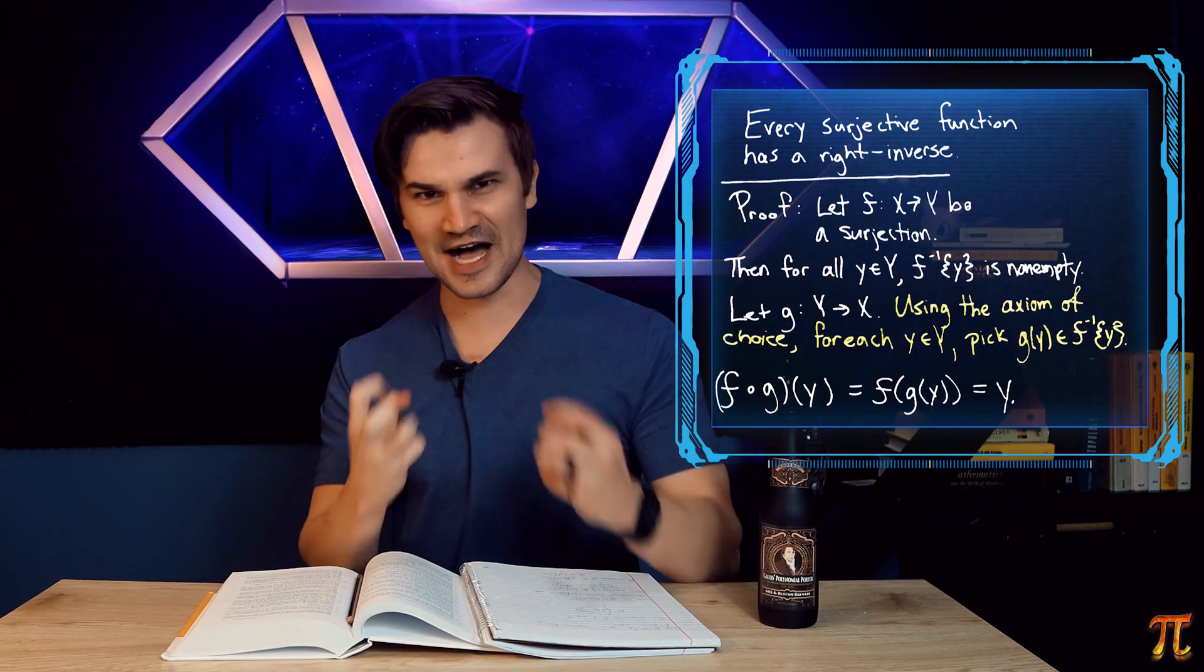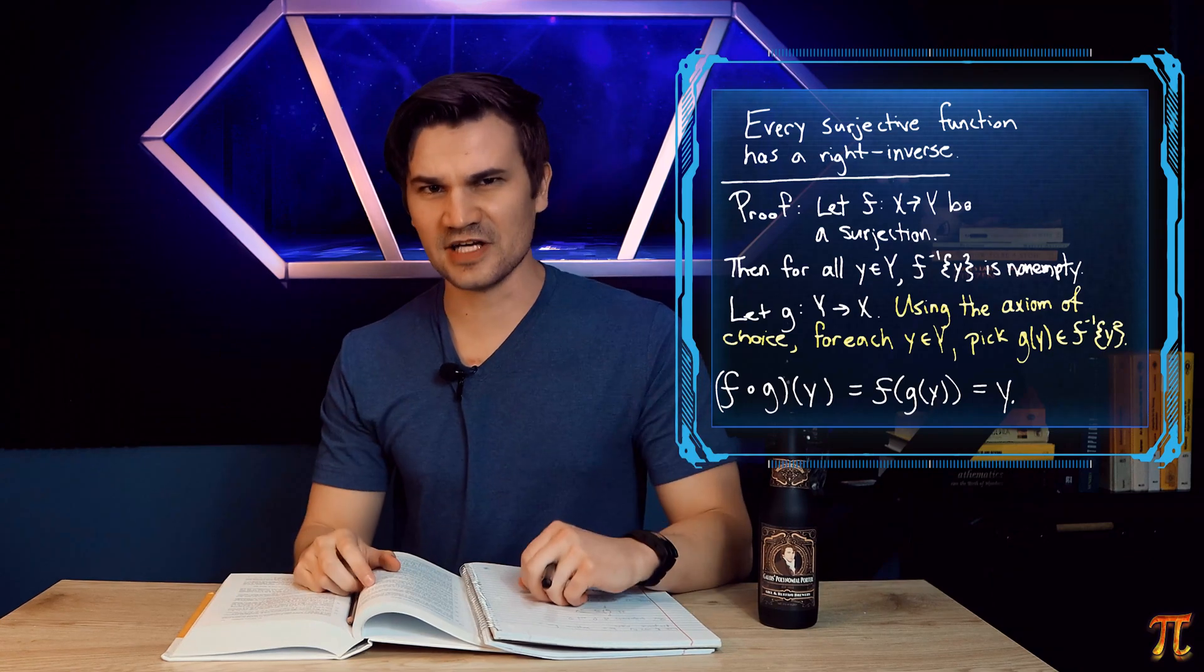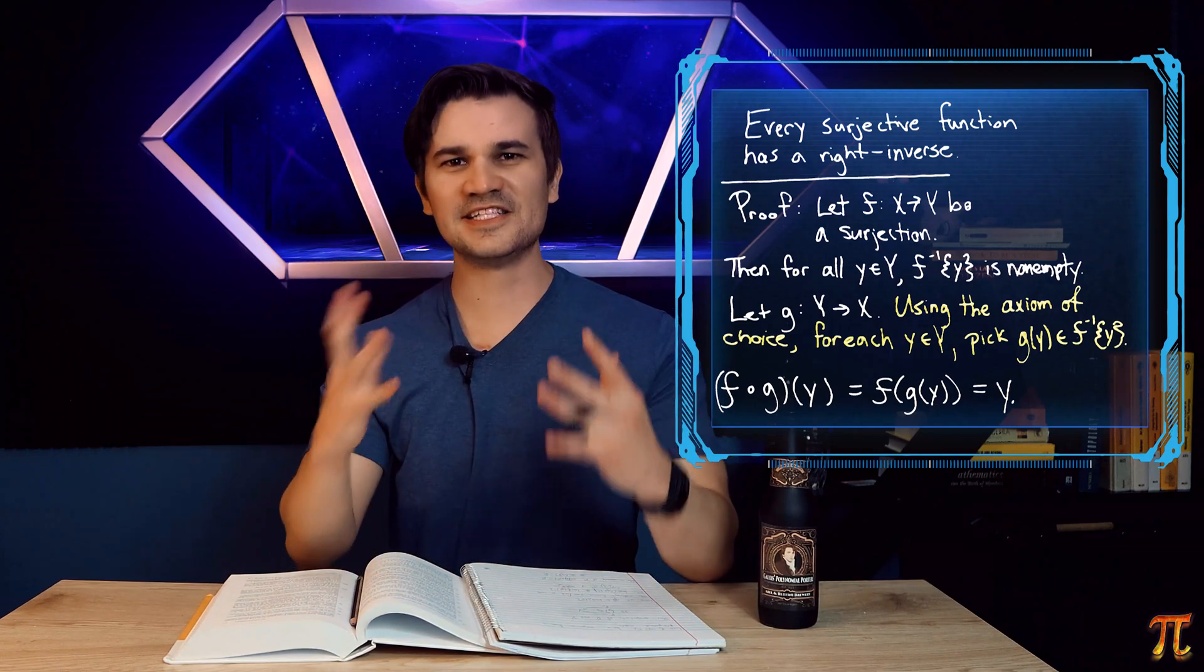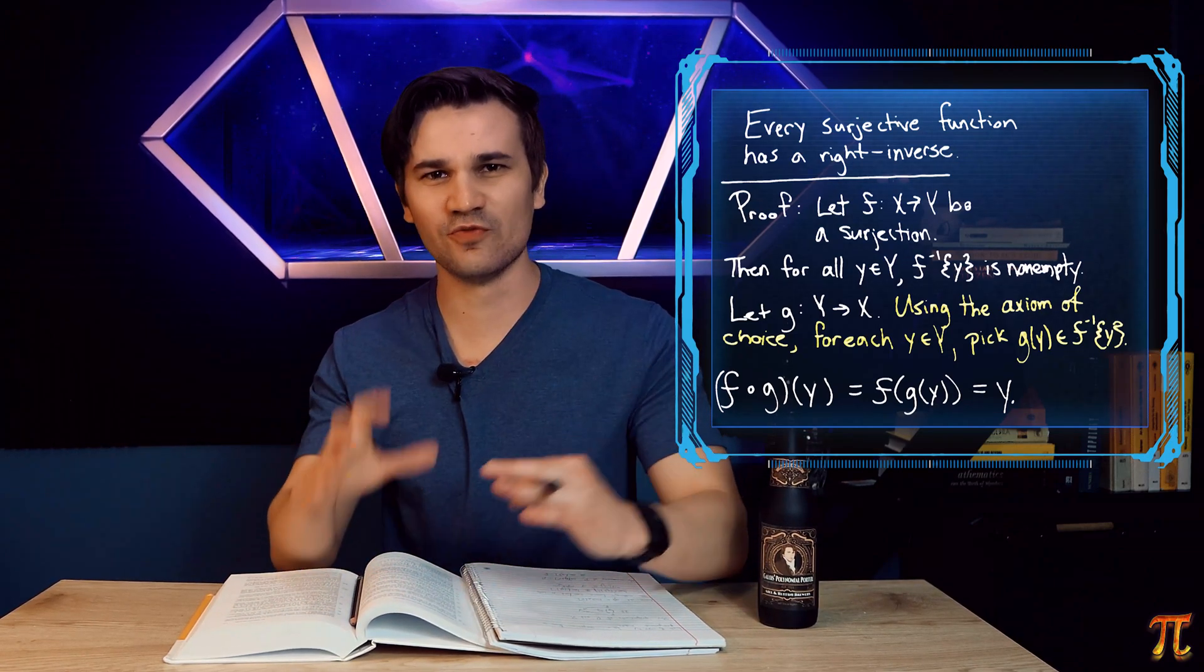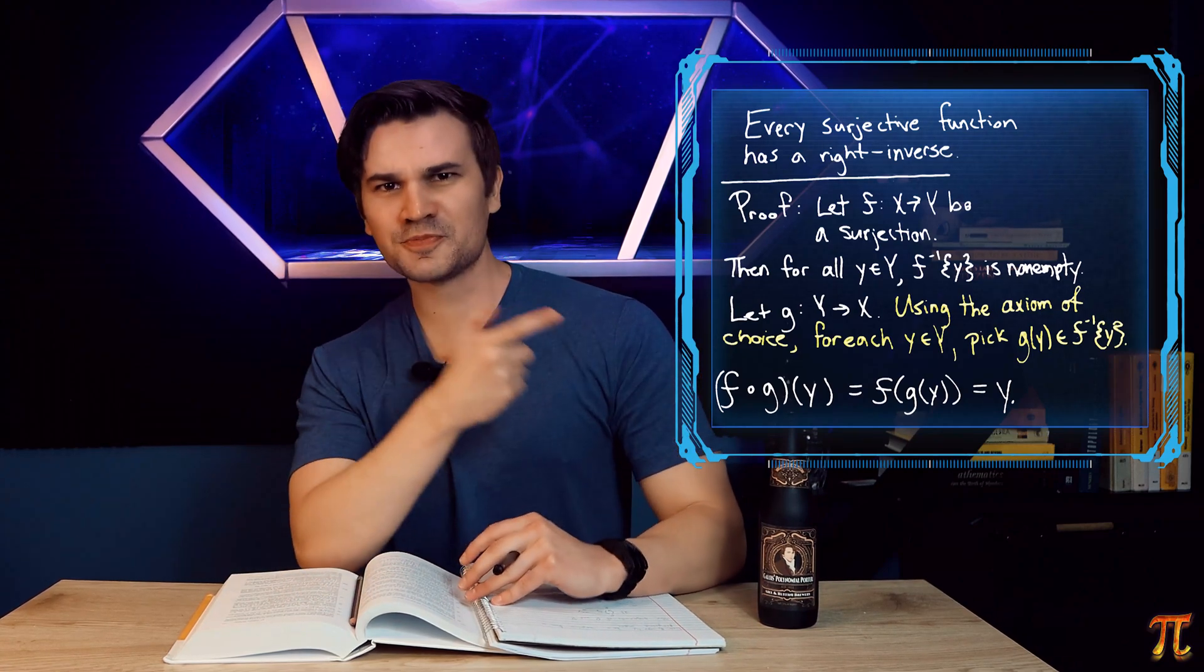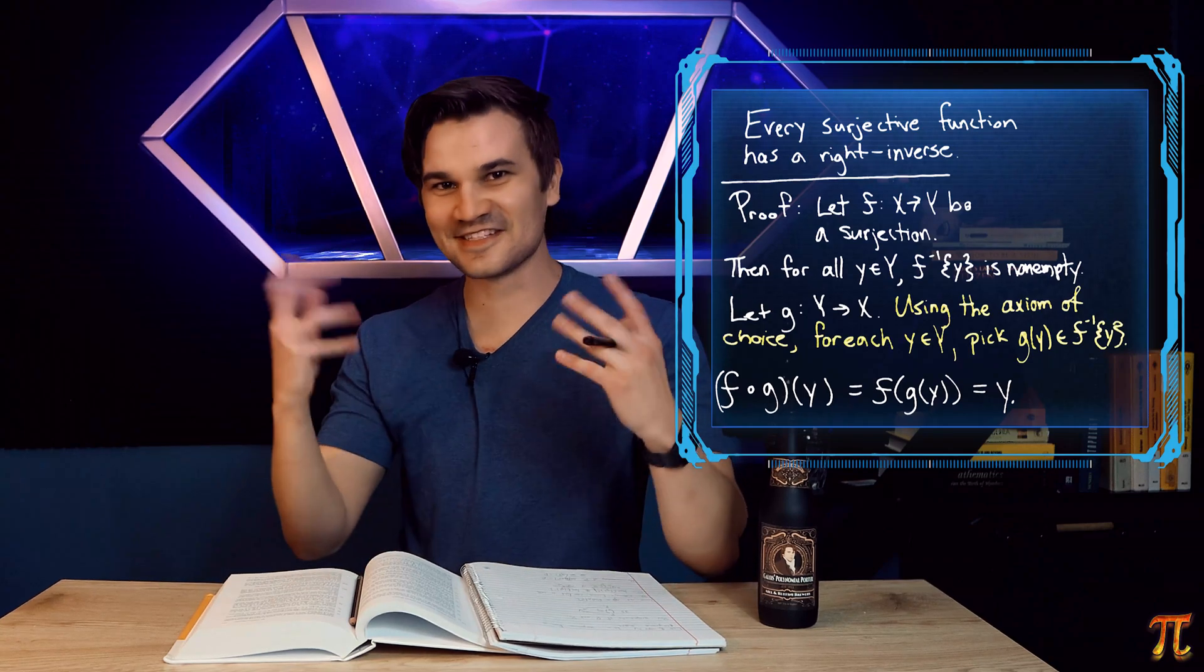Now, pay close attention to the vibe here. We're just saying, for each element in y, pick an element of its preimage. It's almost as though I'm shifting the selection process to the reader. We're not giving a deterministic definition of what the right inverse is actually doing. We're just saying, oh, look at those preimages there. There's some stuff in there. Map to something in there. That's the axiom of choice.